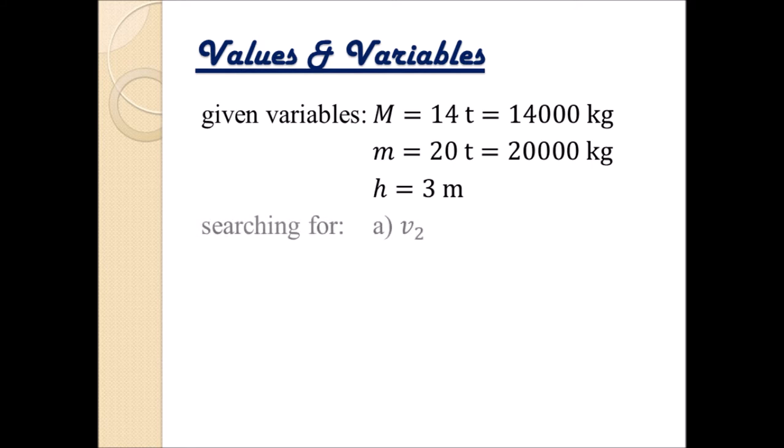What are we searching for? Well, first of all in point A we are searching for the velocity of the second car, the moving car, let's call it v2. And B, we are searching in addition for the height, let's call it h star, which they will reach together when the load is in the stationary and not in the moving car.